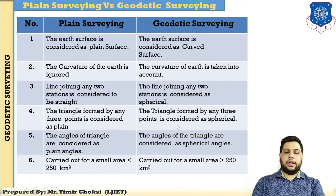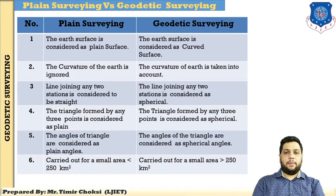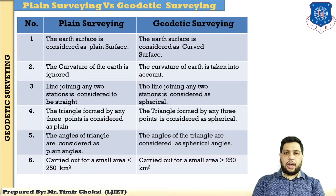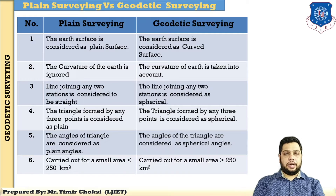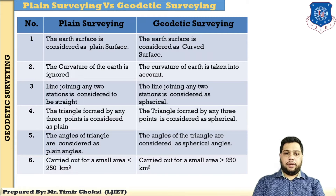You have already studied in basic civil engineering the primary division of survey: one is plane survey and the second is geodetic survey. The first difference between them is that in plane survey the earth's surface is considered as a plane, but when the earth's surface is considered as a curve, it is called a geodetic survey.